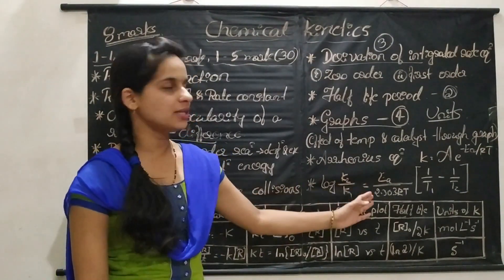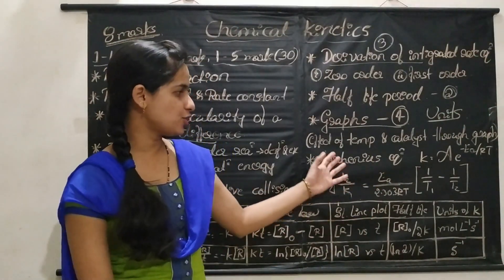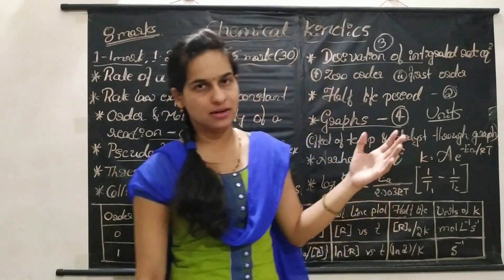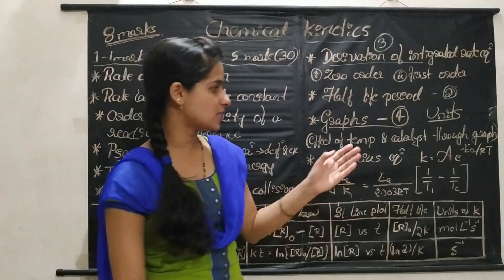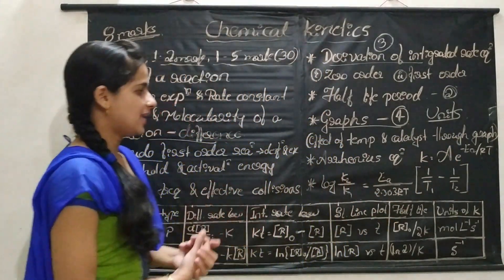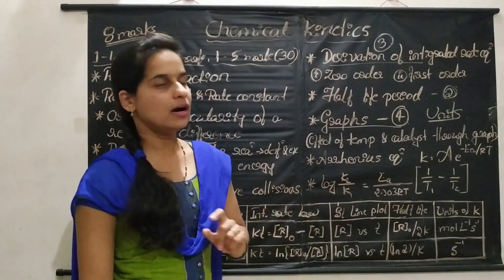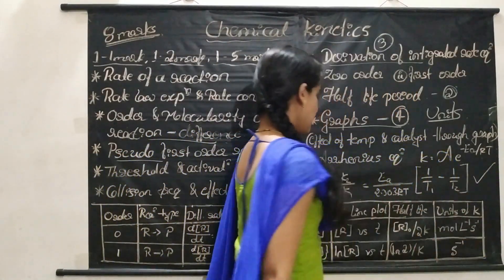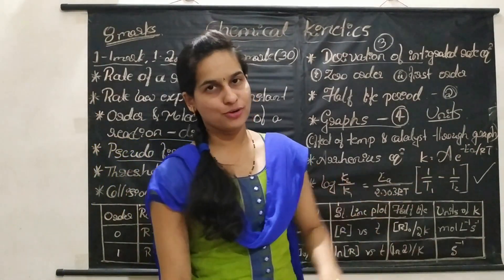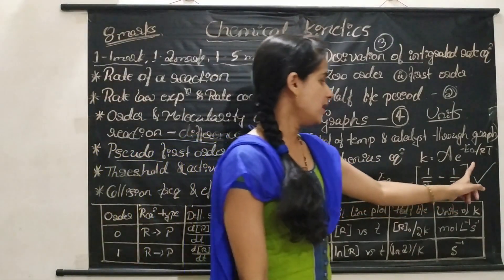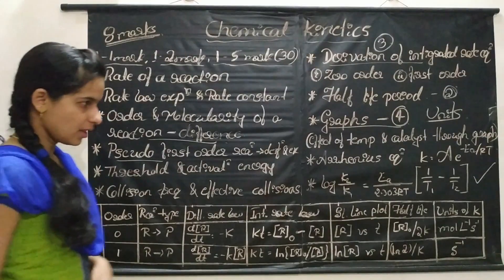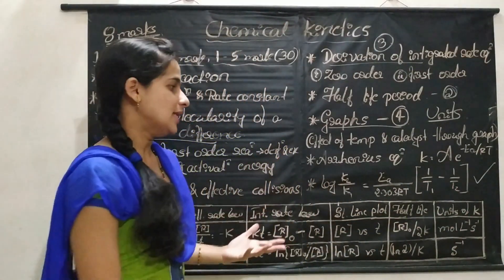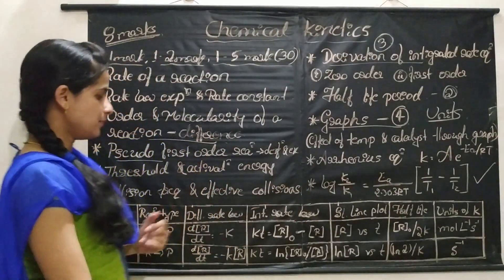You have to study four graphs: the effect of temperature and catalyst through graph, and two graphs for zero order and first order reaction. Also, the unit for rate constant for zero order and first order reaction is important — for one mark you may be asked to write the unit for the rate constant. Then, the Arrhenius equation may be asked for one mark: 'What is the Arrhenius equation?' If asked to write it, you have to explain the terms — what is K, what is A, what is Ea (activation energy). A three-mark or two-mark numerical may be asked based on the equation: log(K₂/K₁) = Ea / (2.303 × R) × (1/T₁ − 1/T₂). You may be asked to calculate the rate constant at a given temperature when two temperatures are given.